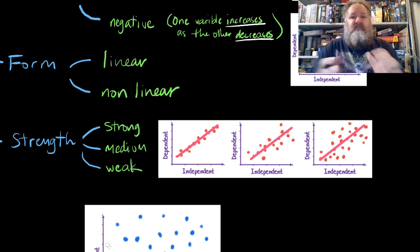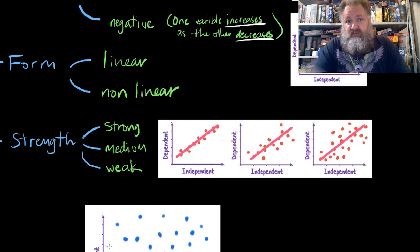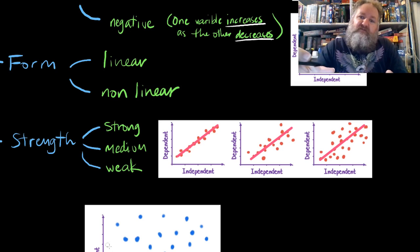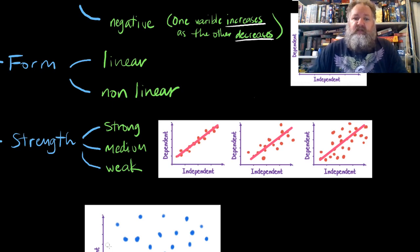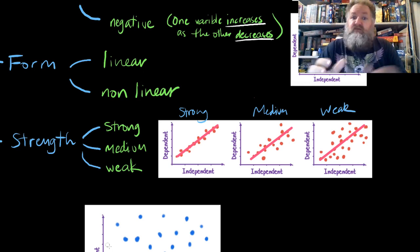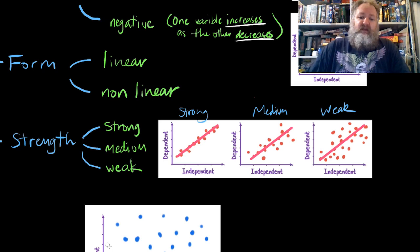And this one there's even more distance again. So the further the points are away from that line of best fit that we'll talk more about in the future - that regression line - as they get further and further away from that, it shows a weakening of the relationship between the independent and the dependent variable. So what we would do is we would say for this one here, this would be strong, this one would be a medium example, and this one would be weak. That's some weak correlation there, some weak relationship between those.